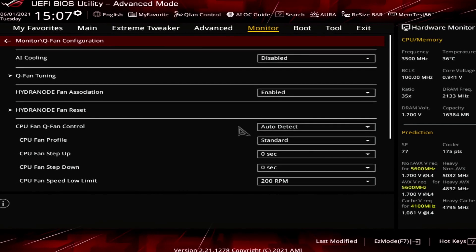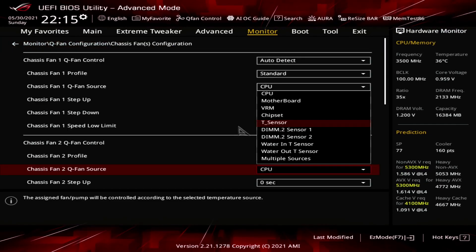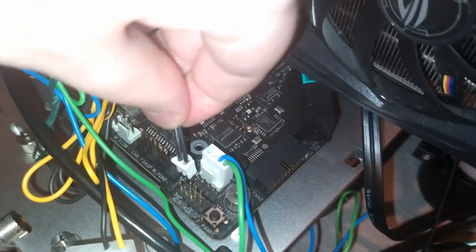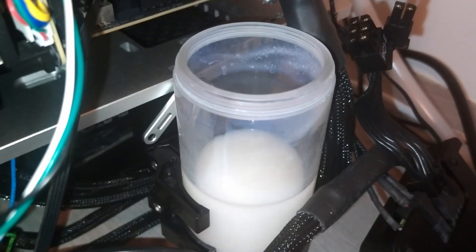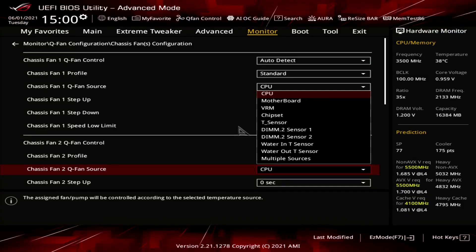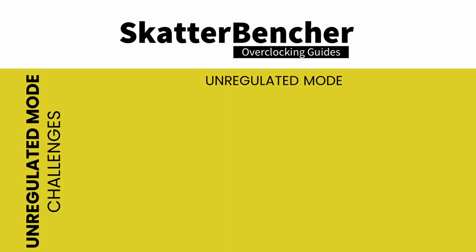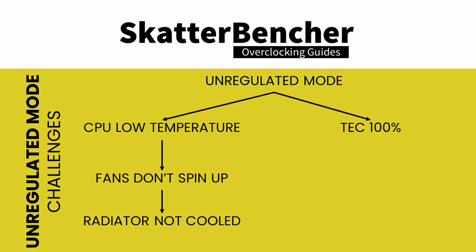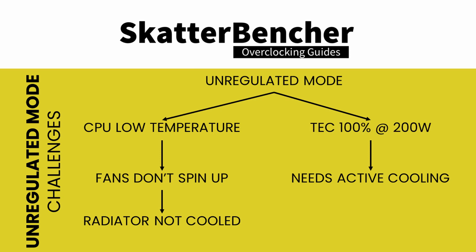For this guide, we'll only use one specific feature. We configure the chassis fan 2 to follow the T sensor. We connect a temperature sensor to the header near the bottom of the motherboard and put the sensor in our water loop. We do this to address a specific issue with the cryo cooling in unregulated mode. By default, the system fans are mapped against the CPU temperature. When we set the cryo cooling to unregulated mode, the CPU temperature will be very low at idle. Therefore, the radiator fans will not spin up and the radiator will not be actively cooled. However, in unregulated mode, the TEC is working at full power and must be actively cooled. In our case, the Delta TEC adds about 200 watts of load in the water loop.